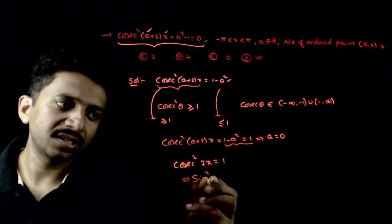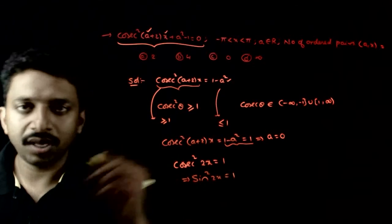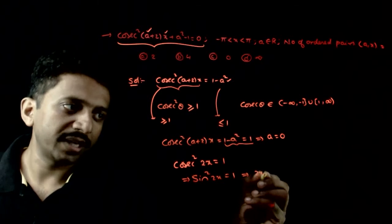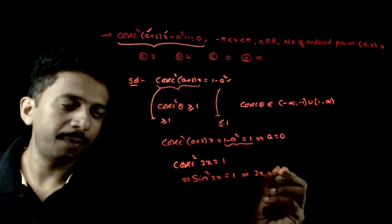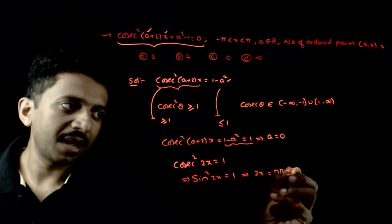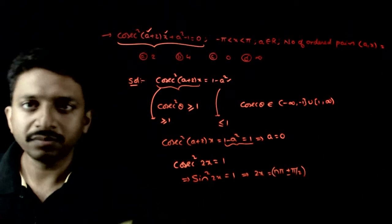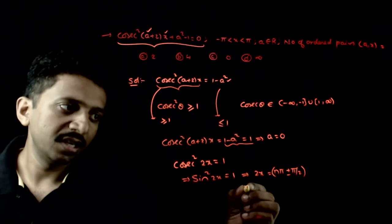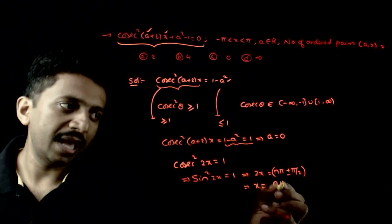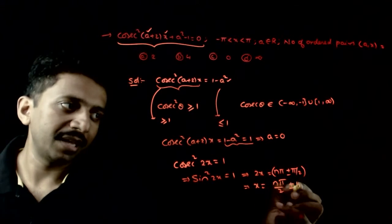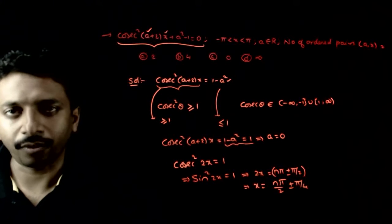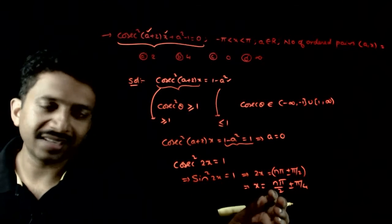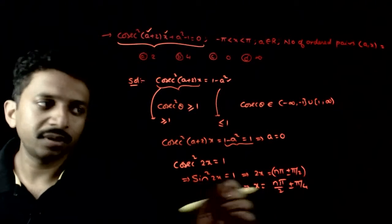Cosecant squared (2x) = 1 implies sin squared (2x) = 1. This means 2x = nπ ± π/2, so x = nπ/2 ± π/4. Therefore a must equal 0 and x must be of the form nπ/2 ± π/4.